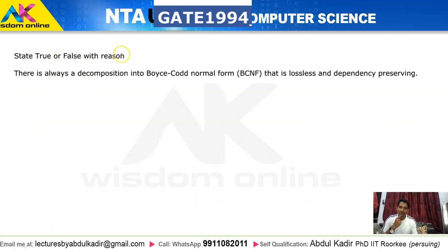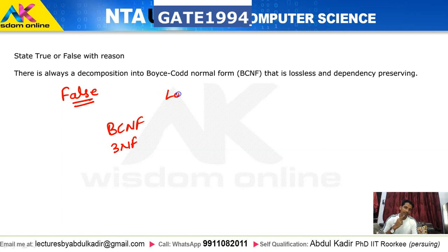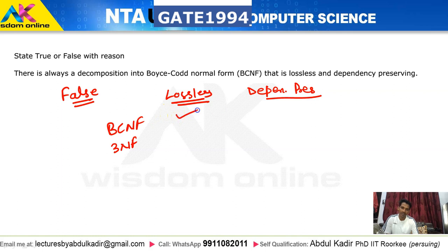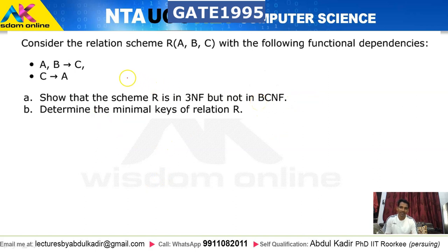The next question asks whether there is always a decomposition into BCNF that is both lossless and dependency-preserving. This is false. In BCNF, decomposition will always give a lossless join, but it may not always be dependency-preserving. In 3NF, decomposition will always give both lossless join and dependency preservation. So BCNF does not always guarantee dependency preservation.